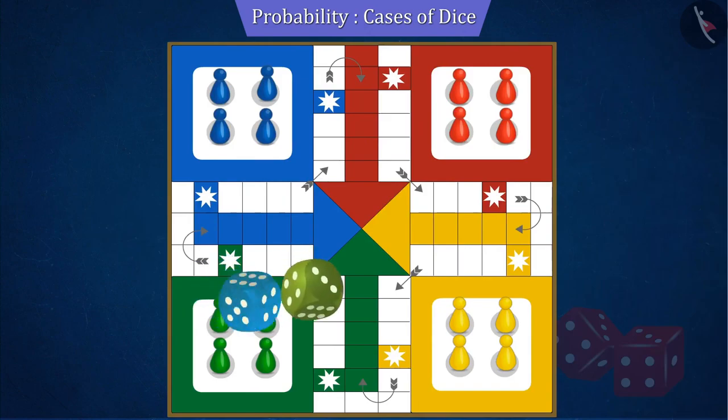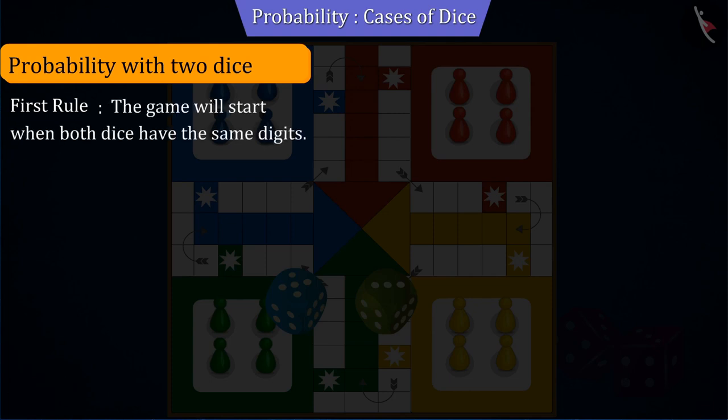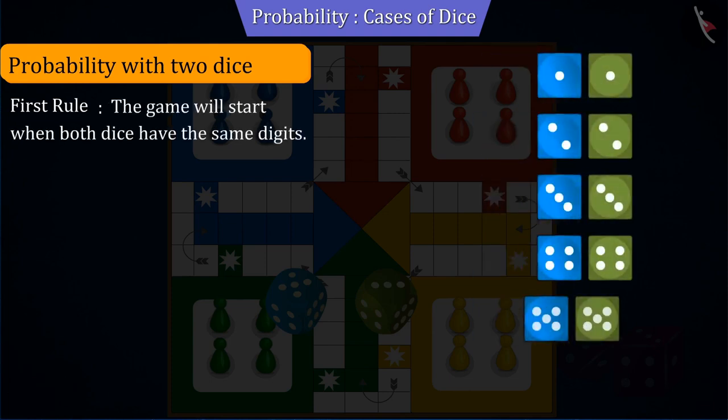This Ludo game with two dice has some rules. The first rule is that the player will start the game only when both dice have the same digits.